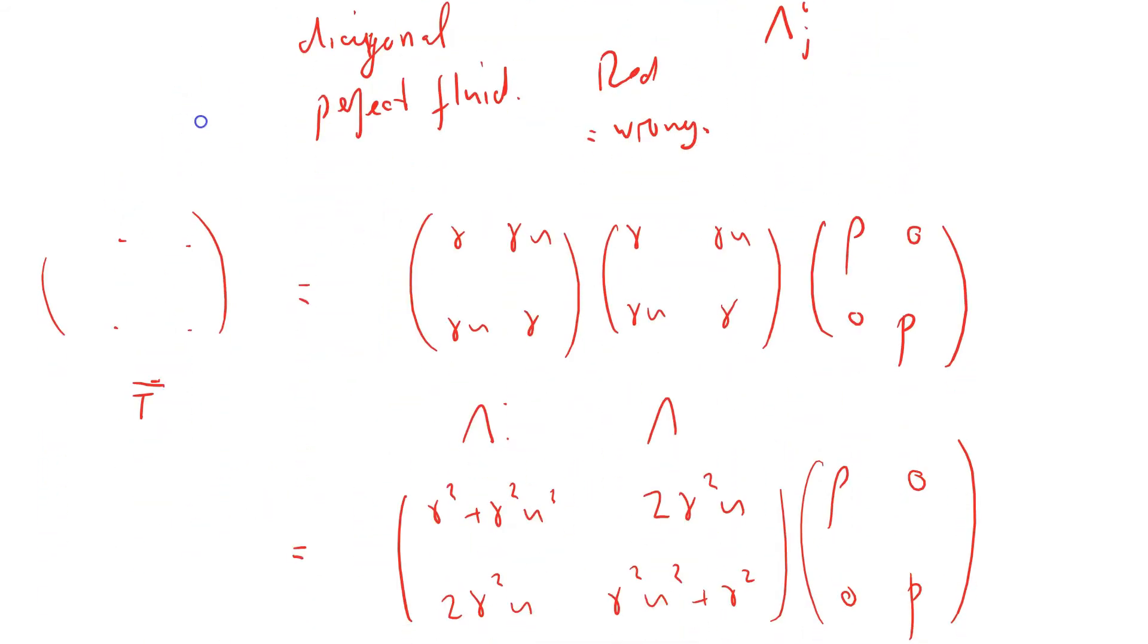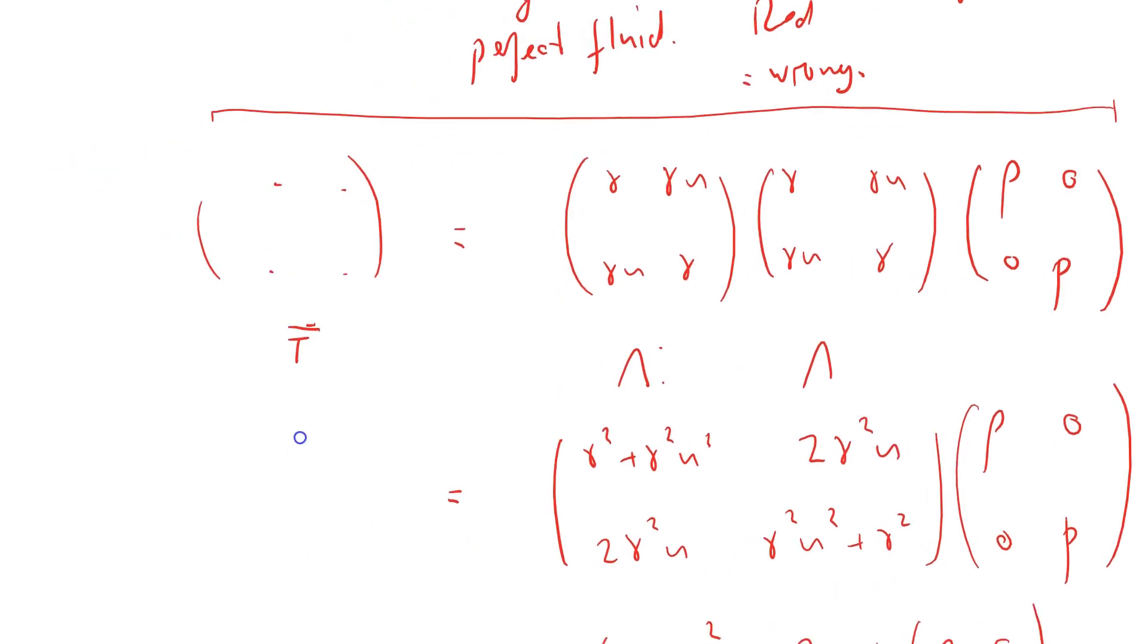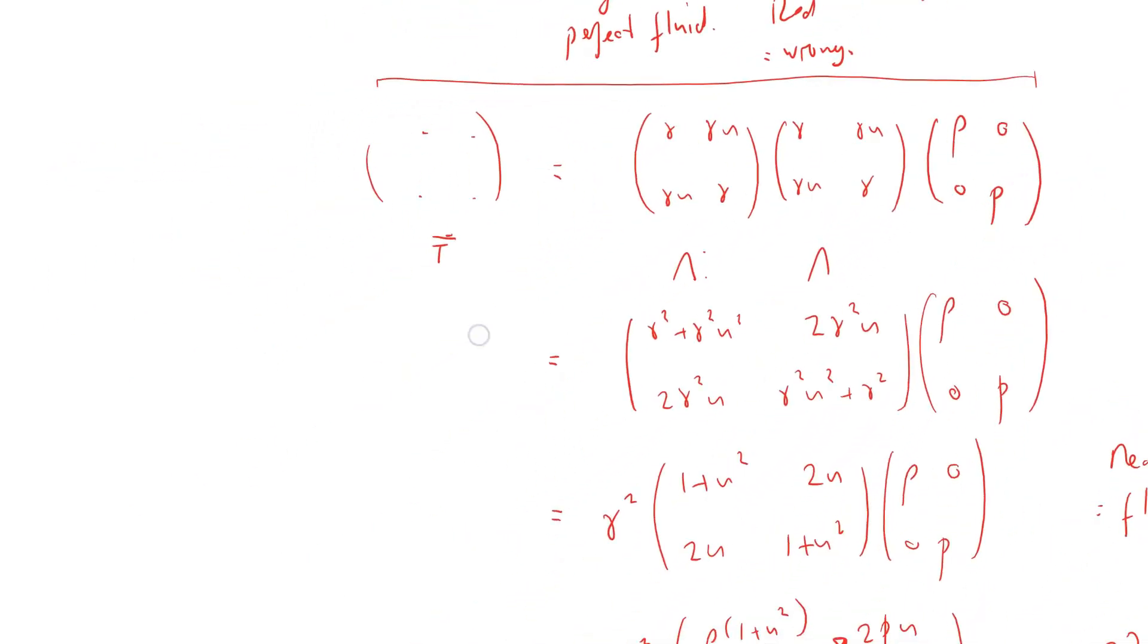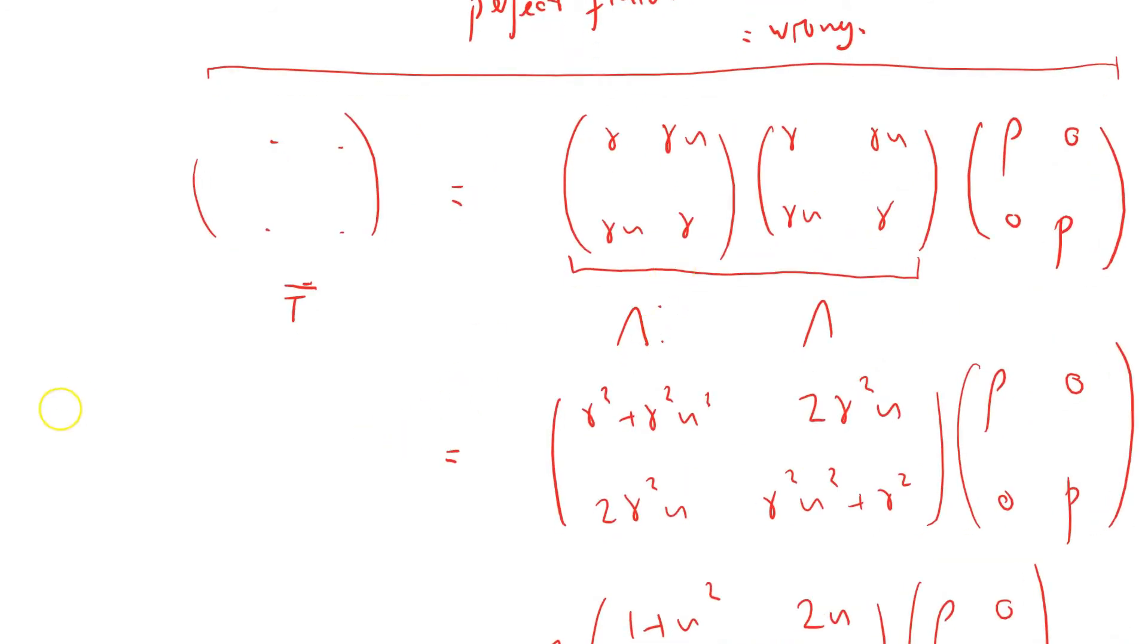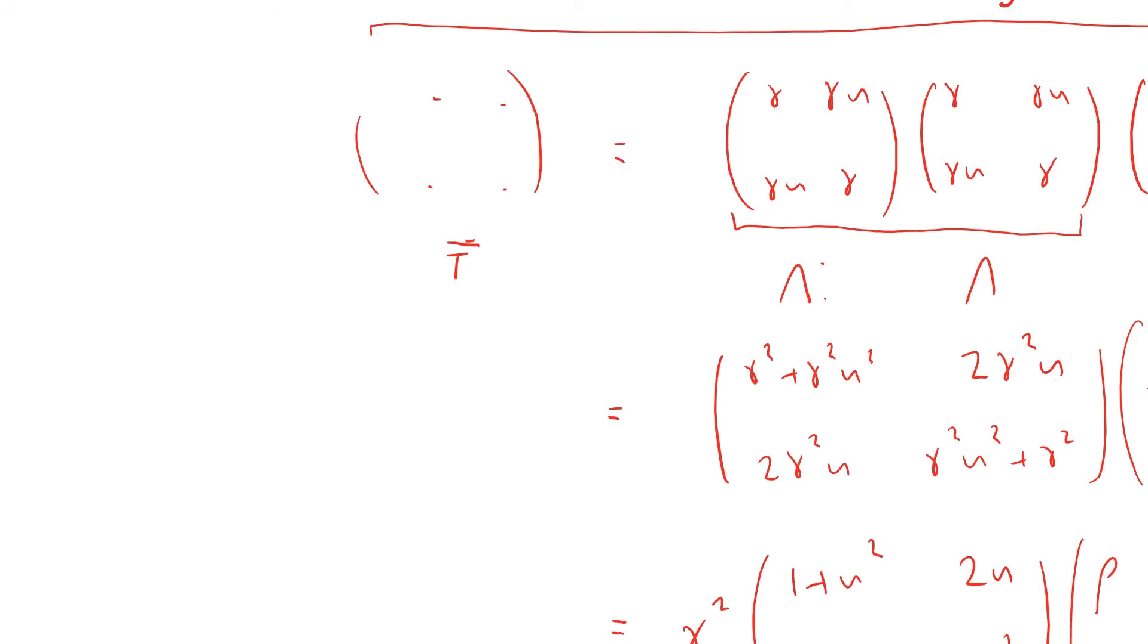Until you realize, well let me just write out what this thing here actually specifies. What these two terms are here, we've got, I'll go back to black because I'm going to talk about things properly now. Gamma, gamma u, gamma u, gamma. Gamma, gamma u, gamma u, gamma.